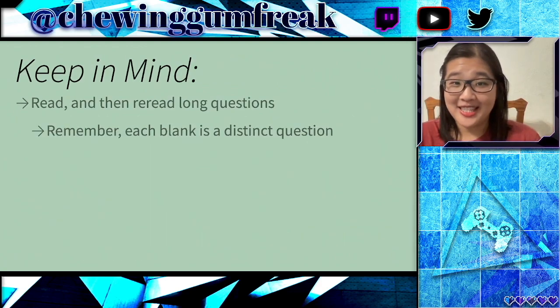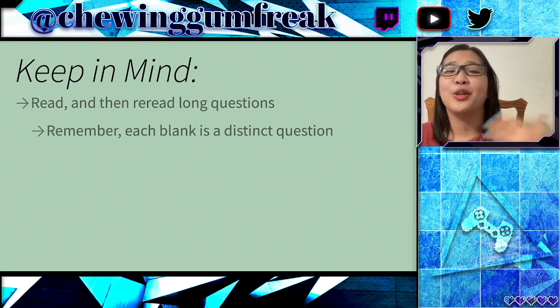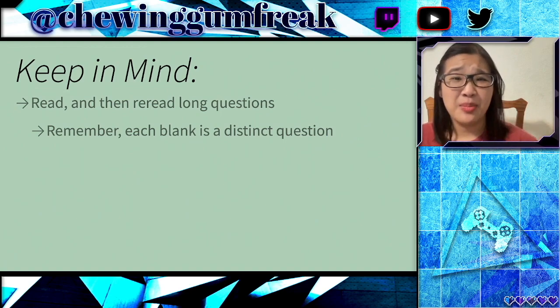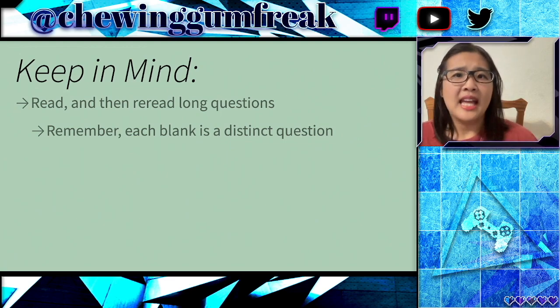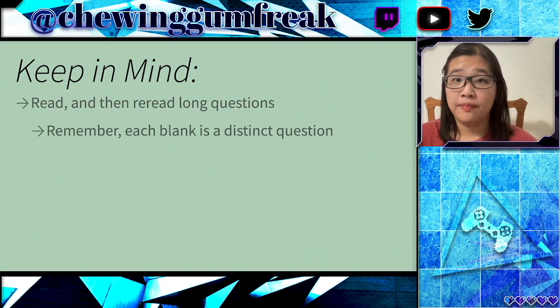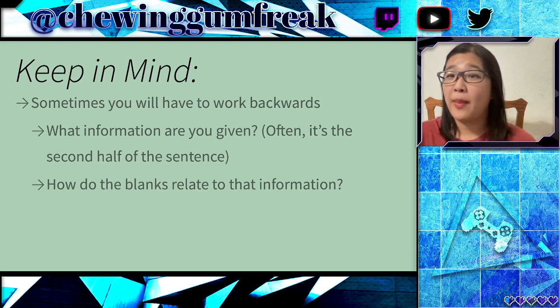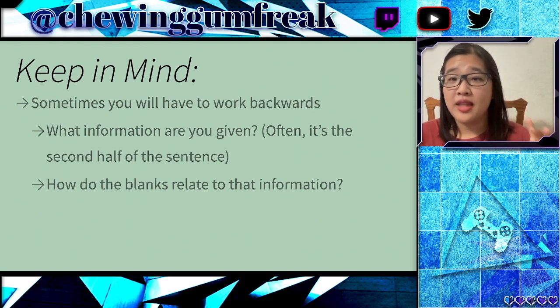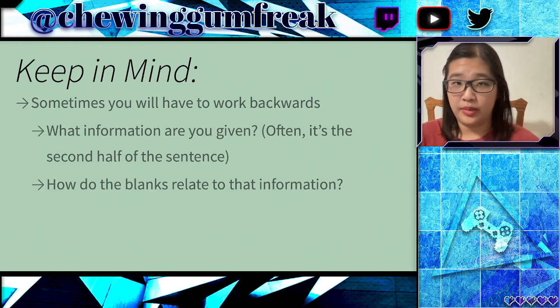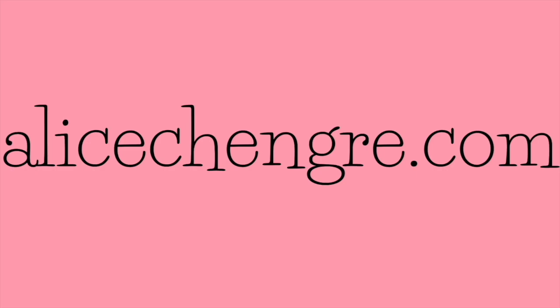Hopefully this illustrates the idea that you really want to read and reread long questions — they can be pretty confusing. Treat each blank as a distinct question if you're worried about timing, and take that little bit of extra time to make sure all of the blanks make sense with each other. Don't forget that sometimes you have to work backwards: if you have a lot of good information in the latter half of a sentence, use that and then go look at the previous blanks. If you're looking for more information on how to implement these tips and tricks to get a better score on your GRE, please visit alicechengre.com.